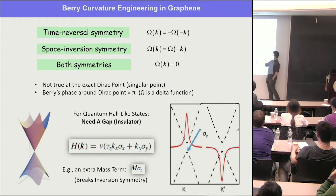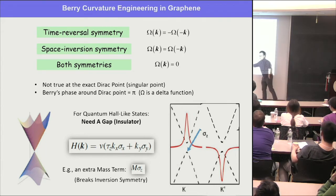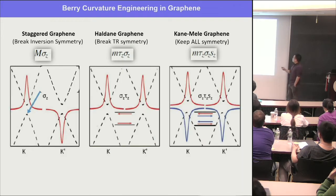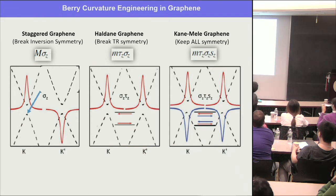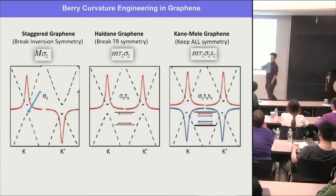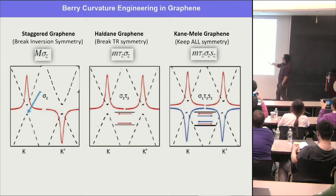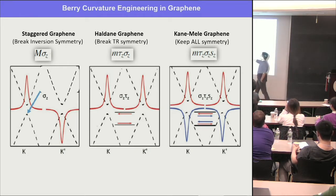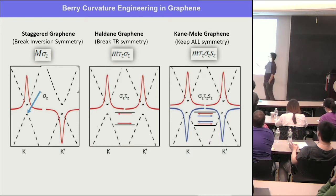If m is positive, the K valley will have positive Berry curvature; if m is negative, everything is reversed and the peak flips. Looking at the Haldane term introduced by Haldane and Kane-Mele: the staggered graphene has positive and negative Berry curvature at k and minus k because inversion symmetry is broken. The Haldane term is similar to staggered graphene but with a valley index tau, so one valley gets negative m. This means one sign flips and both valleys get positive Berry curvature, giving a non-zero Chern number — that's the quantum Hall effect.